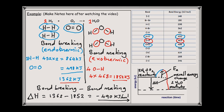To summarize, in this video we have looked at how to work out the overall energy change for a chemical reaction. It is useful to draw displayed formulae of reactants and products to identify what bonds are being broken and formed. Once identified, we calculate the energy for bond breaking and bond making, then take bond breaking minus bond making to find delta H, the overall energy change. We can also draw an energy profile diagram showing the activation energy and the overall energy change.